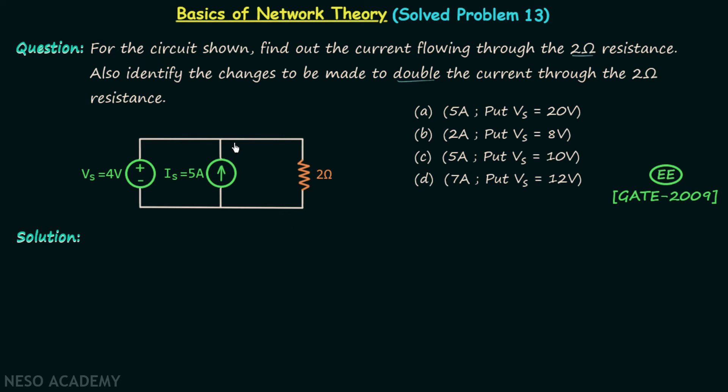This is the given network and we have three elements in this network. A voltage source providing 4 volts, a current source providing 5 amperes, and one resistor having the value 2 ohms. We are required to find out the current through this resistor.